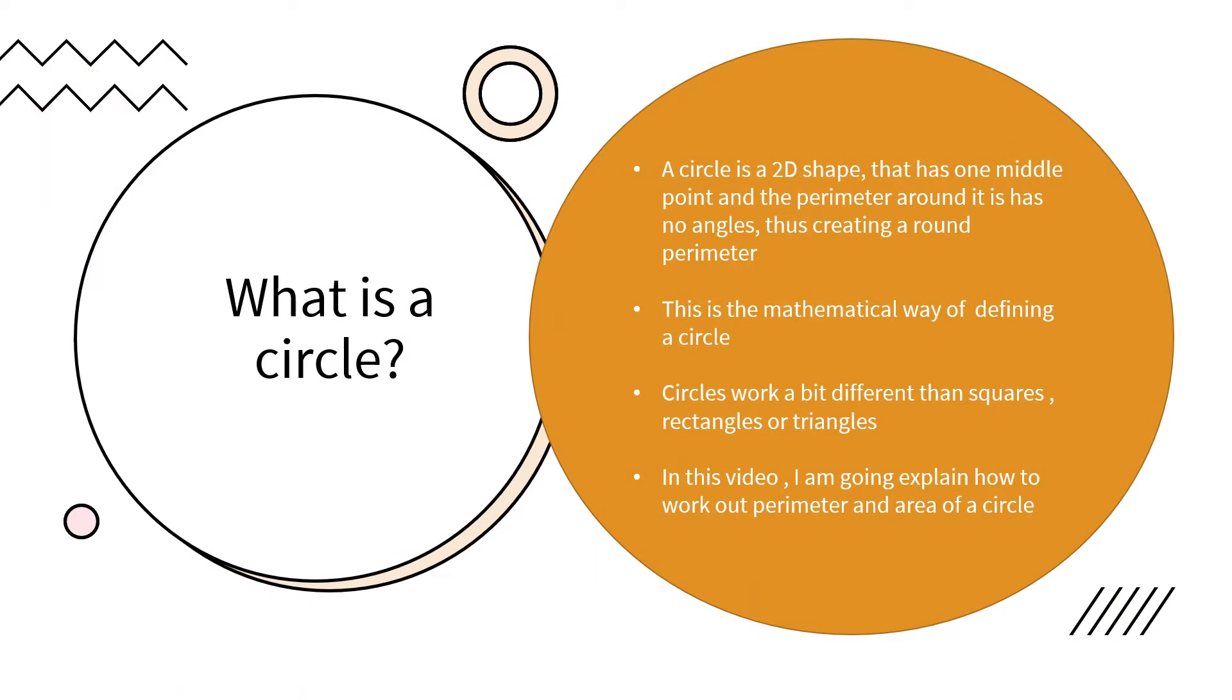What is a circle? A circle is a 2D shape that has one middle point and the perimeter around it has no angles, thus creating a round perimeter.